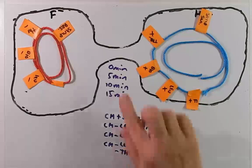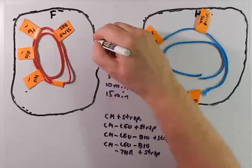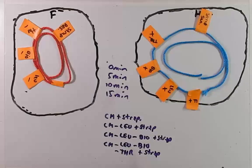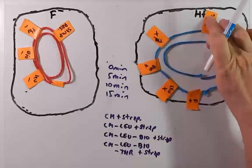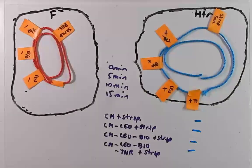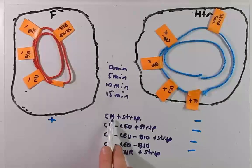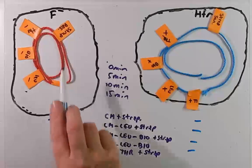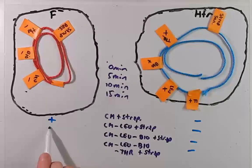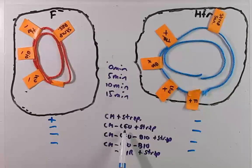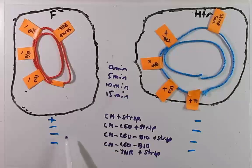Let's consider the zero-minute time point — before the sex pilus has formed and before conjugation occurs. The HFR strain will not grow in any of these media because of its streptomycin sensitivity. The F-minus strain would grow on complete media with streptomycin because it has all the nutrients it needs and is streptomycin resistant. However, it will not grow on the remaining media, because even though it's streptomycin resistant, it cannot make leucine, biotin, or threonine before any genes have transferred over.